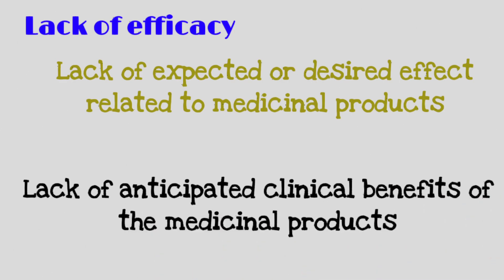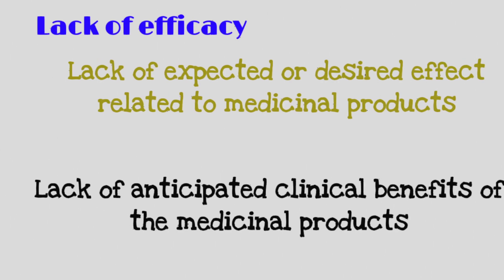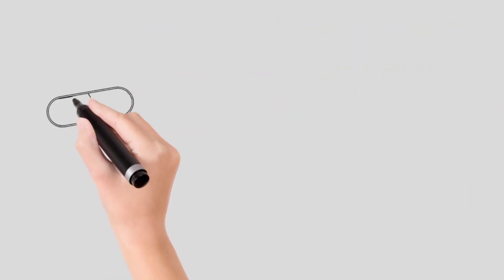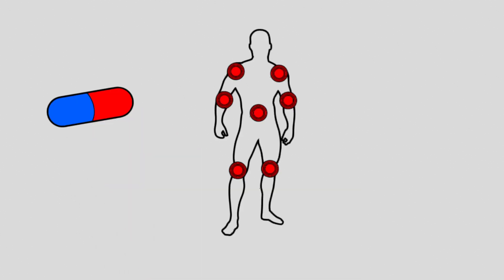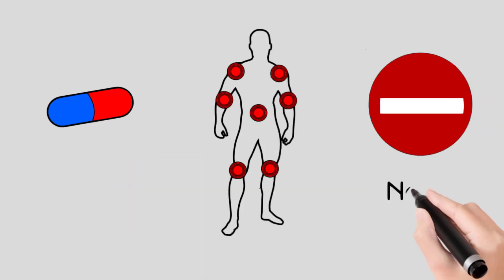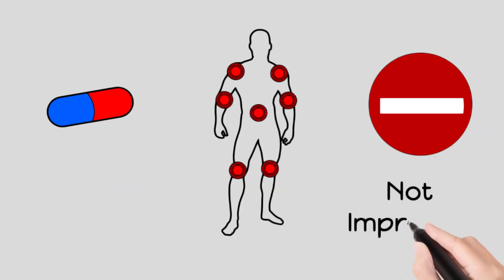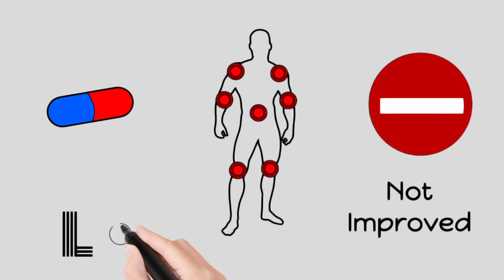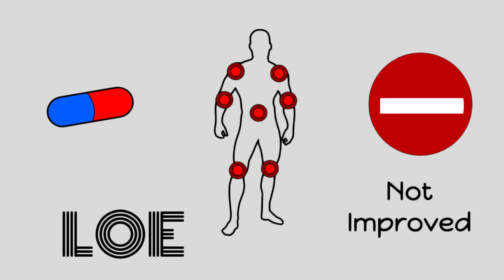Let's take one example to understand this definition. If we receive a safety report stating a patient took one medicine for the treatment of joint pain. However, after taking the medication, the joint pain was not improved. In this scenario, this report is considered as a lack of efficacy report.